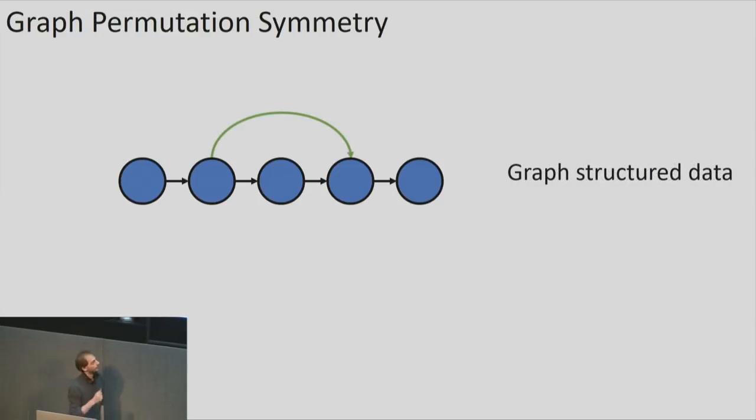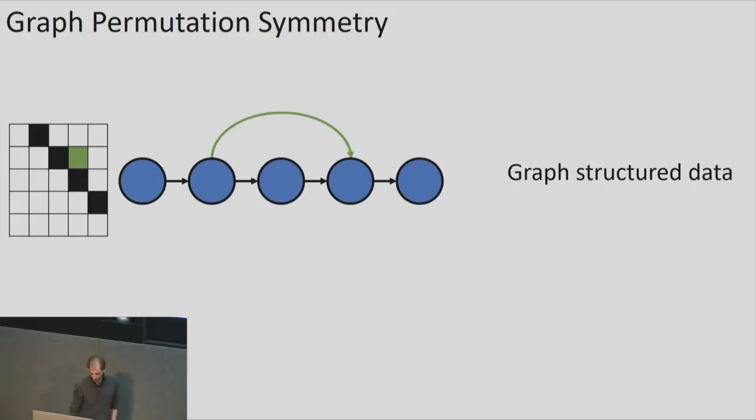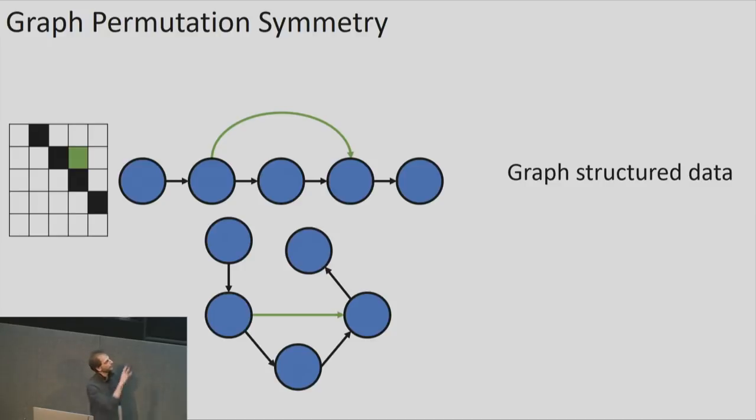Because all we're going to do now is we're going to go to graph structured data. So if we start adding edges to this chain, then we get a general graph. And the important thing about graphs is, you can represent them as a nice adjacency matrix here. But there's a fundamental symmetry that graphs have that you can draw them in many different ways and they all represent the same thing. You can commute the order of the vertices and you get a different adjacency matrix. But fundamentally, all of these representations on the slide represent exactly the same graph. And so any model that we construct for analyzing graphs has to be invariant under these symmetries.